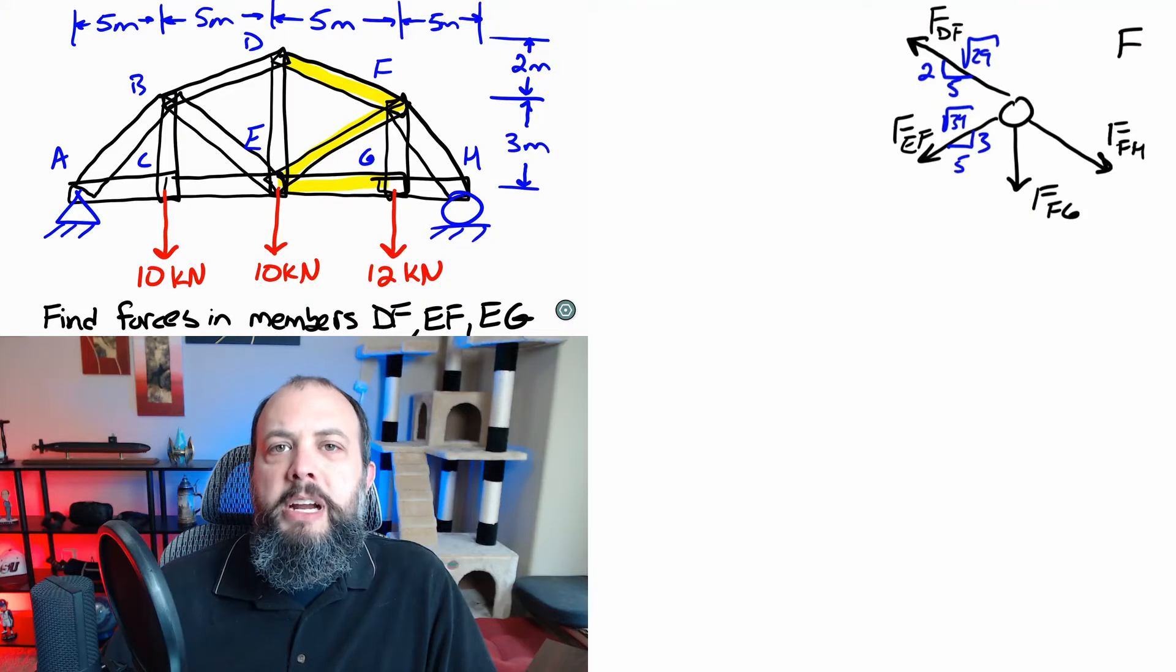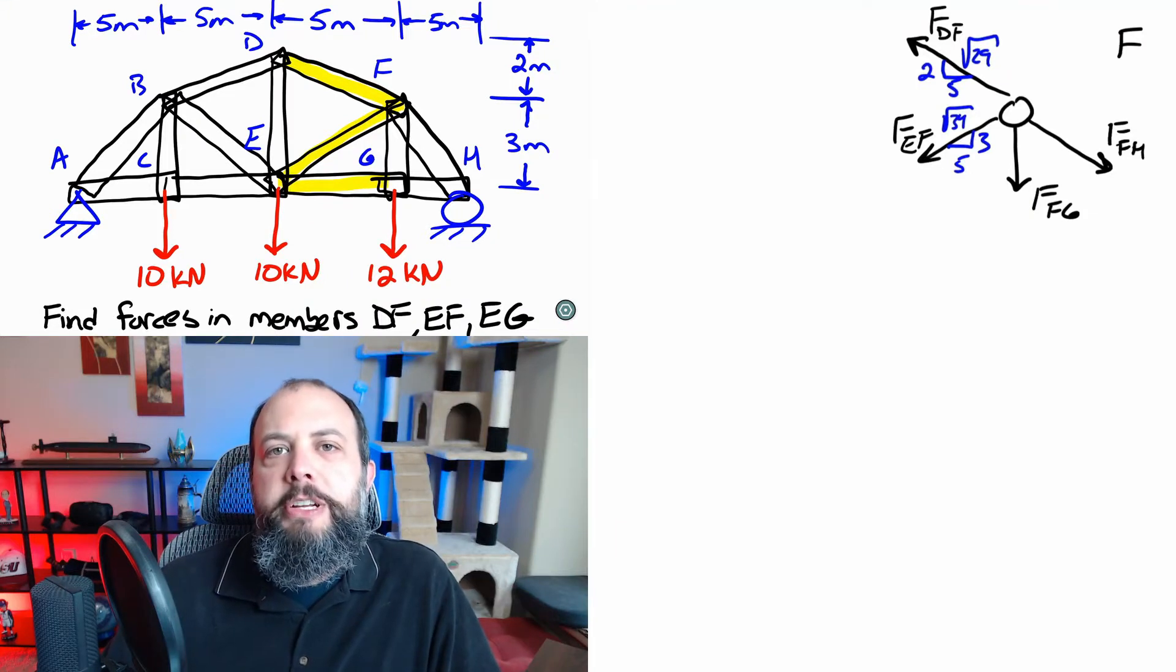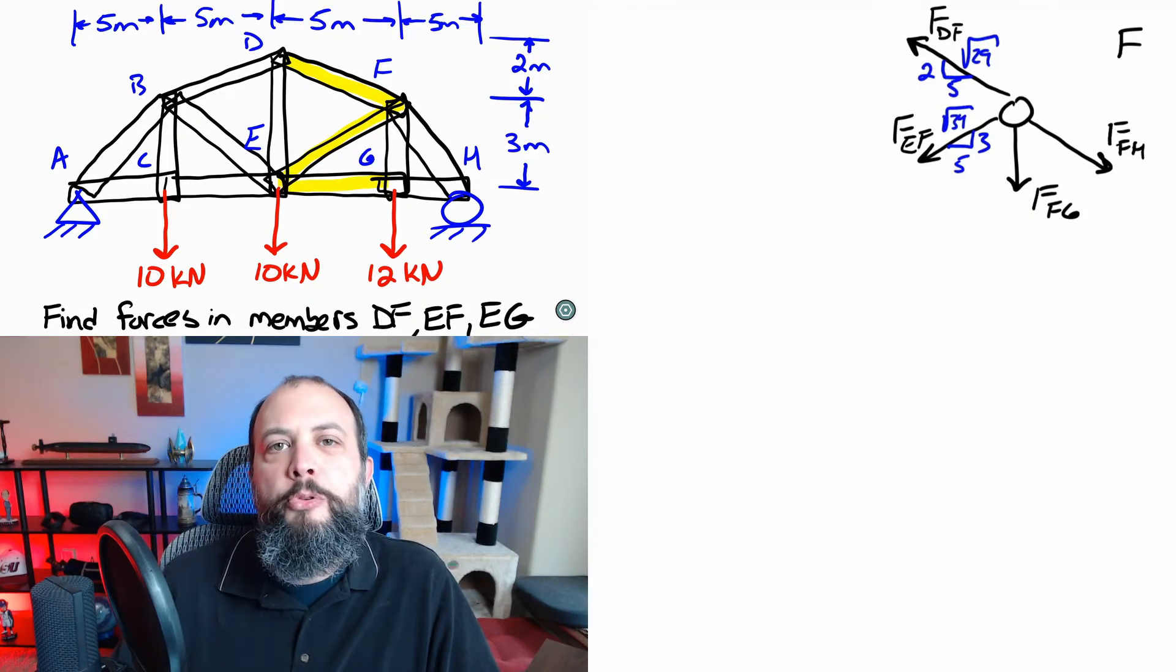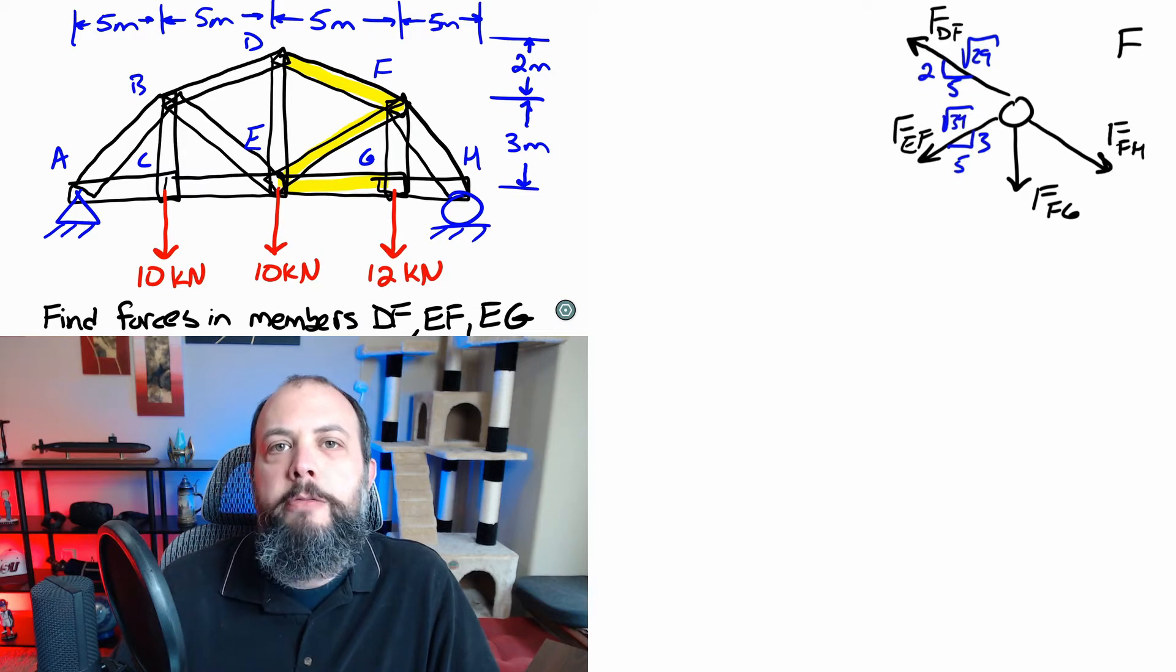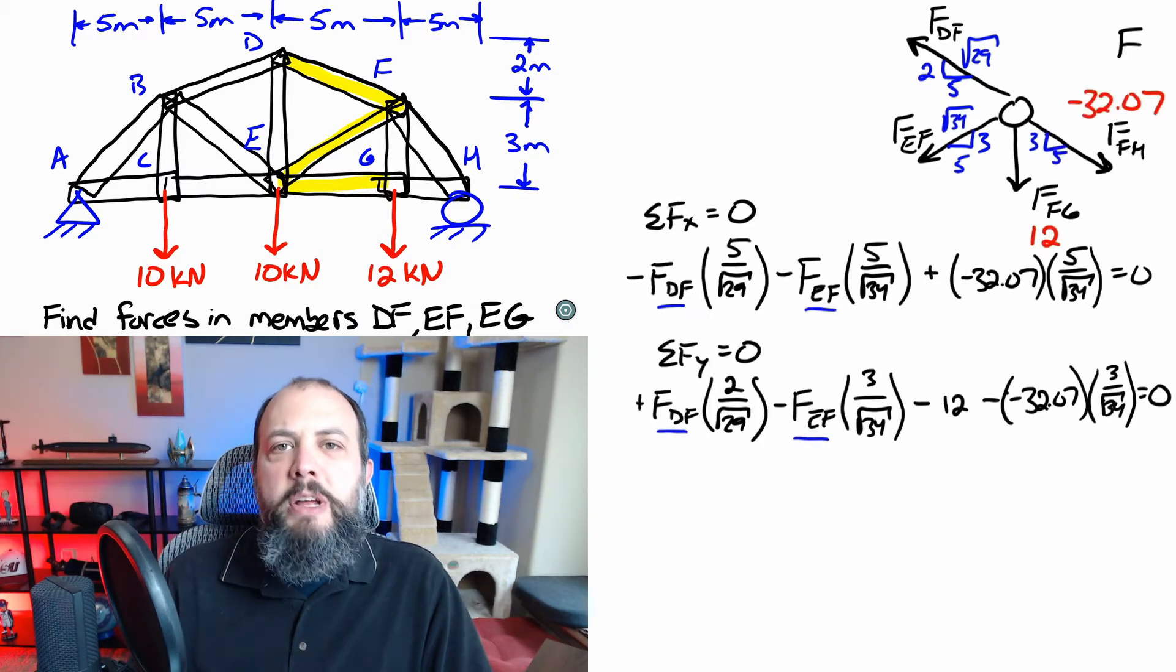One more joint to go. The free body diagram has four members all intersecting at one point but from our previous two free body diagrams we've solved for two of these already. Writing out the equations of equilibrium sum of forces in x and y equals zero.